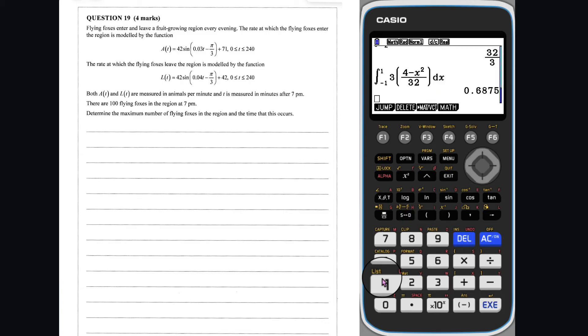Question 19. To determine when the greatest number of flying foxes are present, we need to work out a function for the number of flying foxes in the region at a given time, t. To do this, we start by evaluating the number of flying foxes entering and leaving by time t.